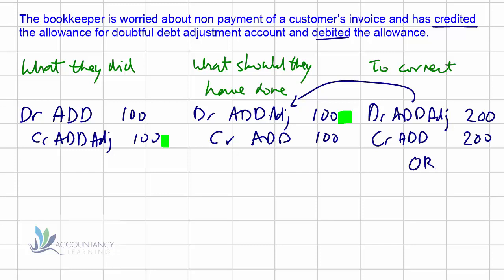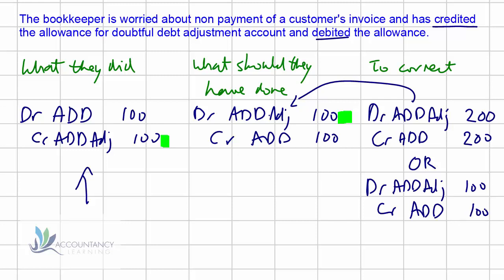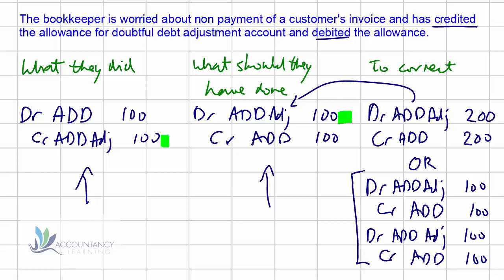If the assessment asks you to do this in two stages: first, reverse the original incorrect entry. They debited the allowance and credited the adjustment, so to reverse that we debit the adjustment account with 100 and credit the allowance with 100. The second step is to do what they should have done: debit the allowance for doubtful debts adjustment account with 100 and credit the allowance with 100. The combination of these two gives us the overall adjustment.